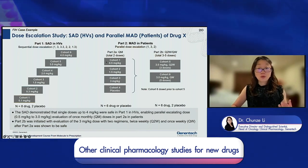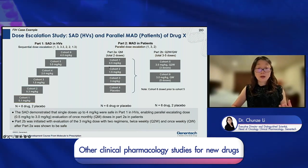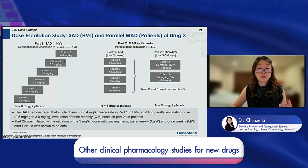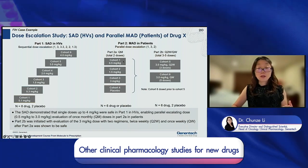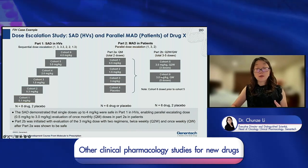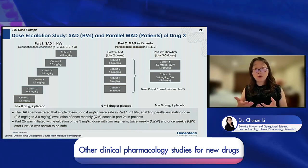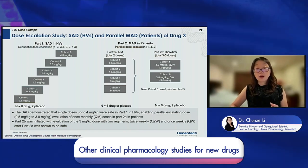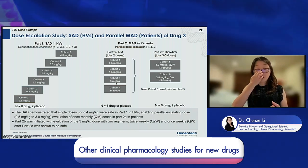Based on SAD safety findings, a parallel study design was used for the MAD — simultaneously treating patients across doses from 0.5 to 3 mg/kg, all below the SAD doses shown to be safe, plus a placebo arm. Patients received two doses once every month. After showing the molecule was safe with two doses, the study was further expanded in Phase 2b to look at different schedules: once every two weeks and once every week at 3 mg/kg.